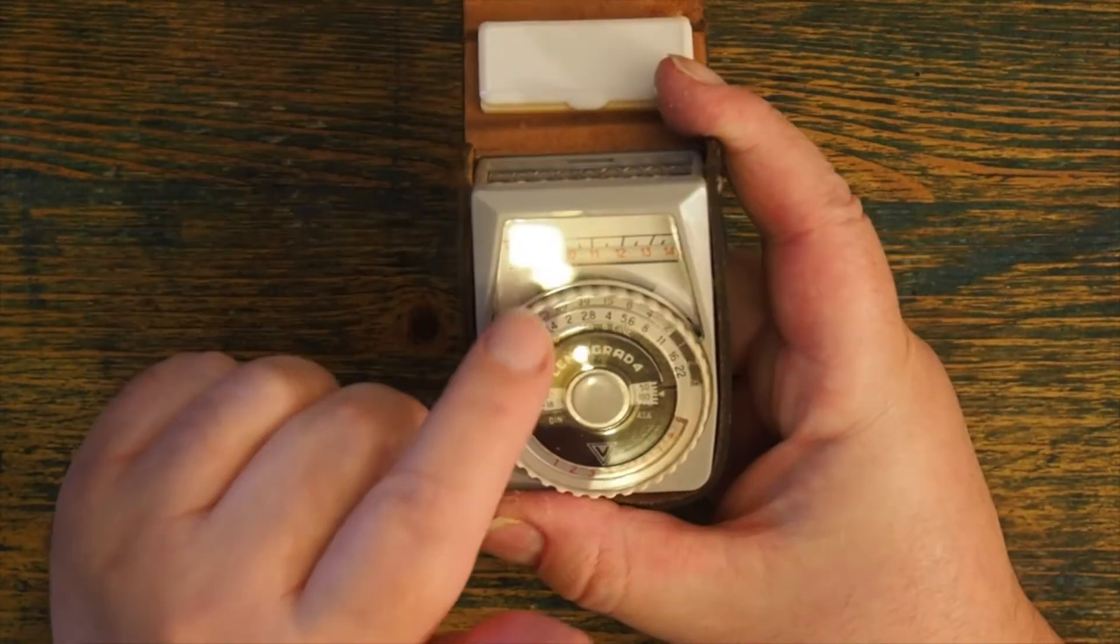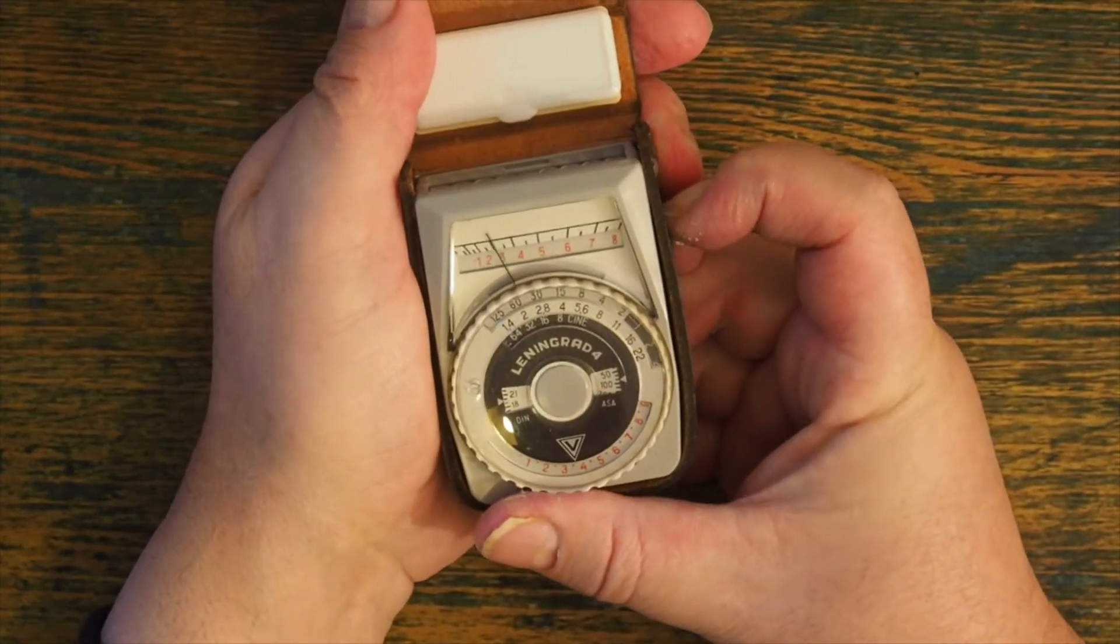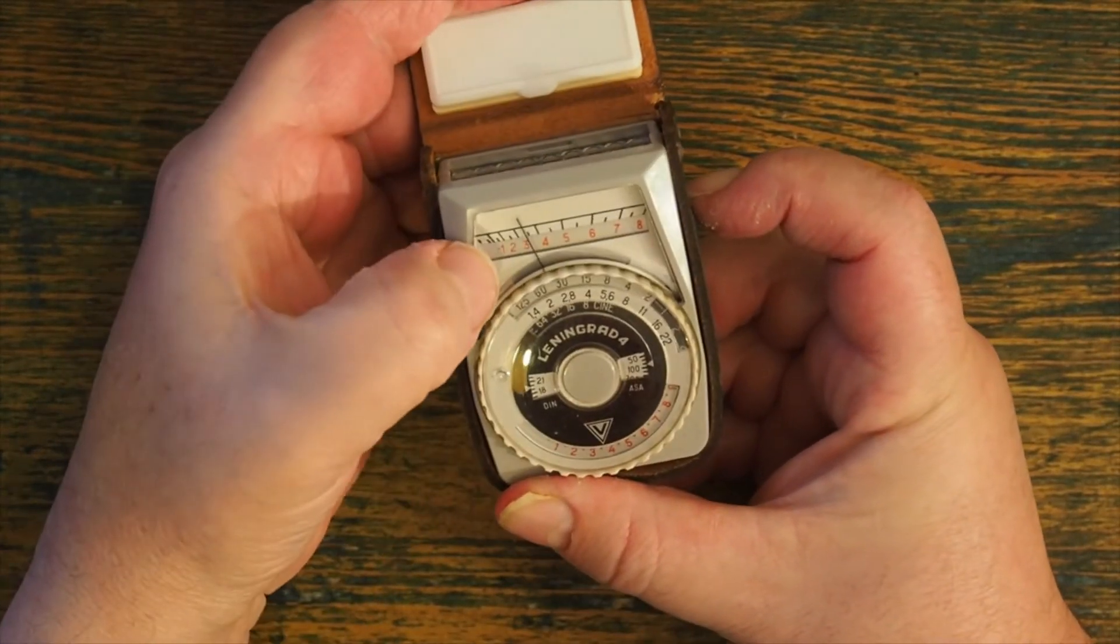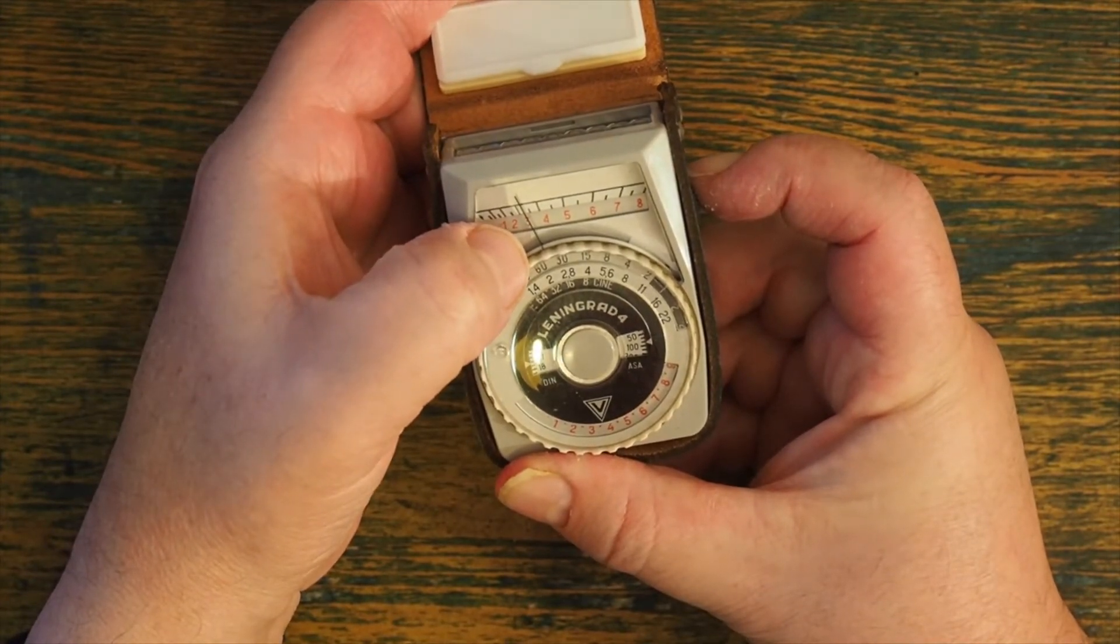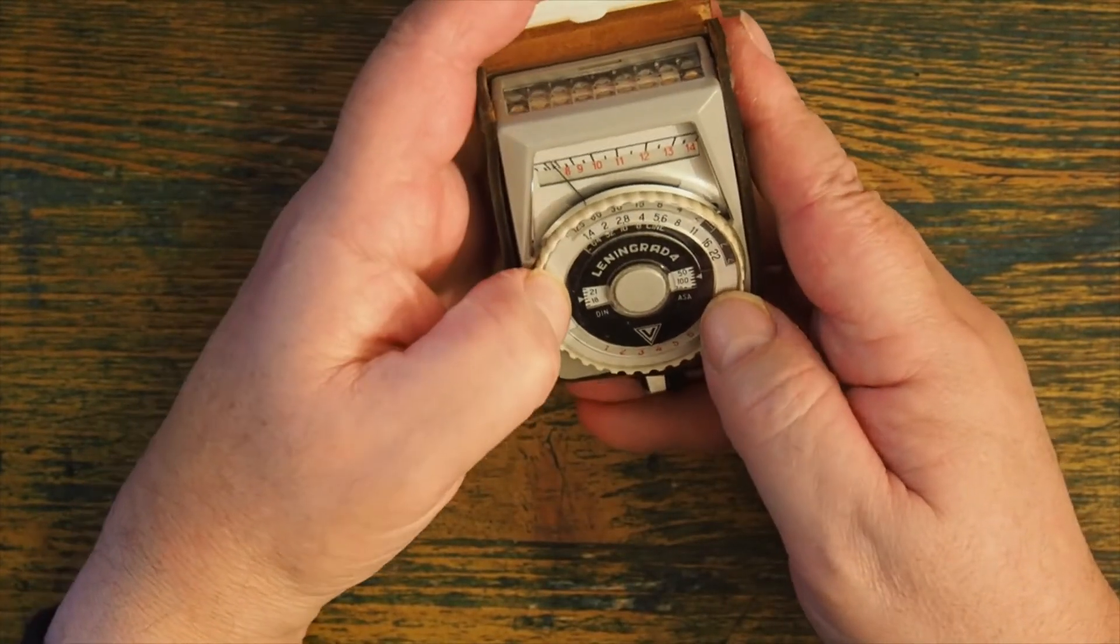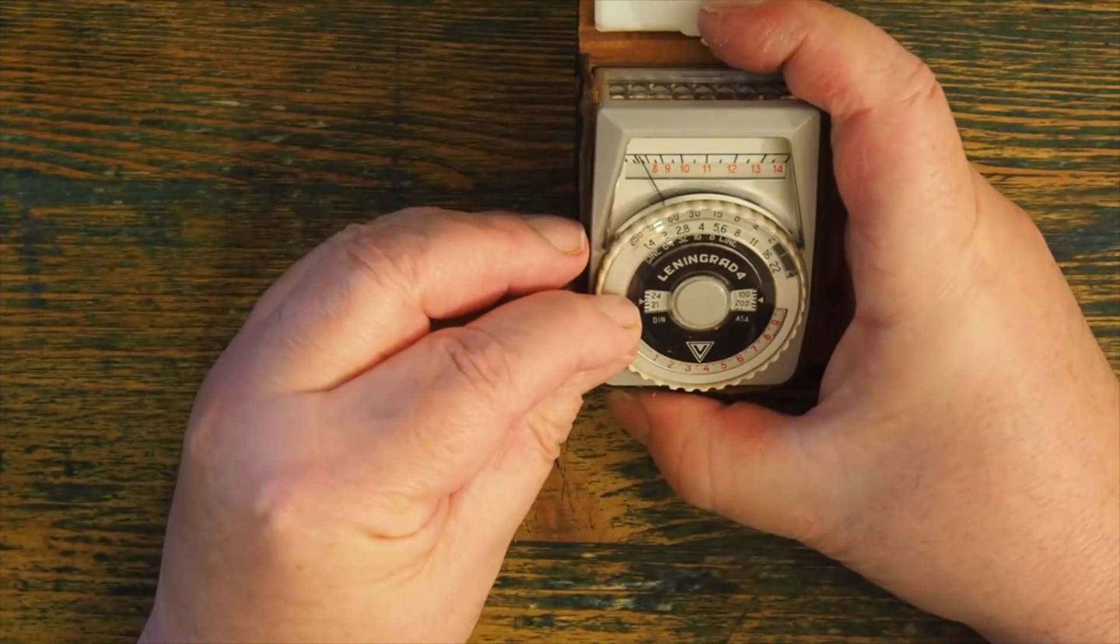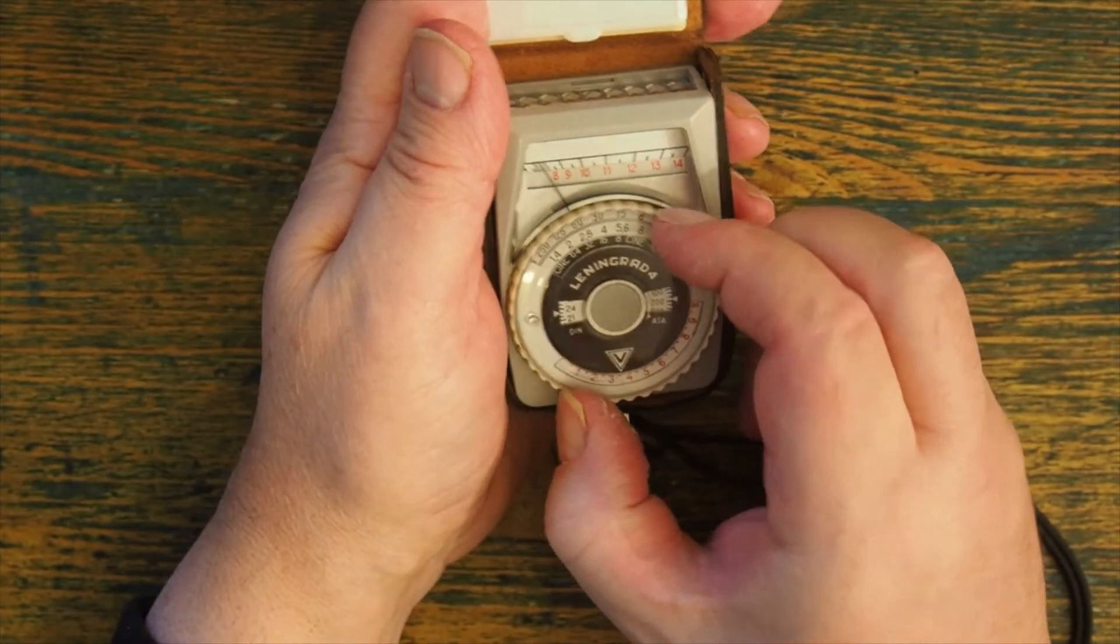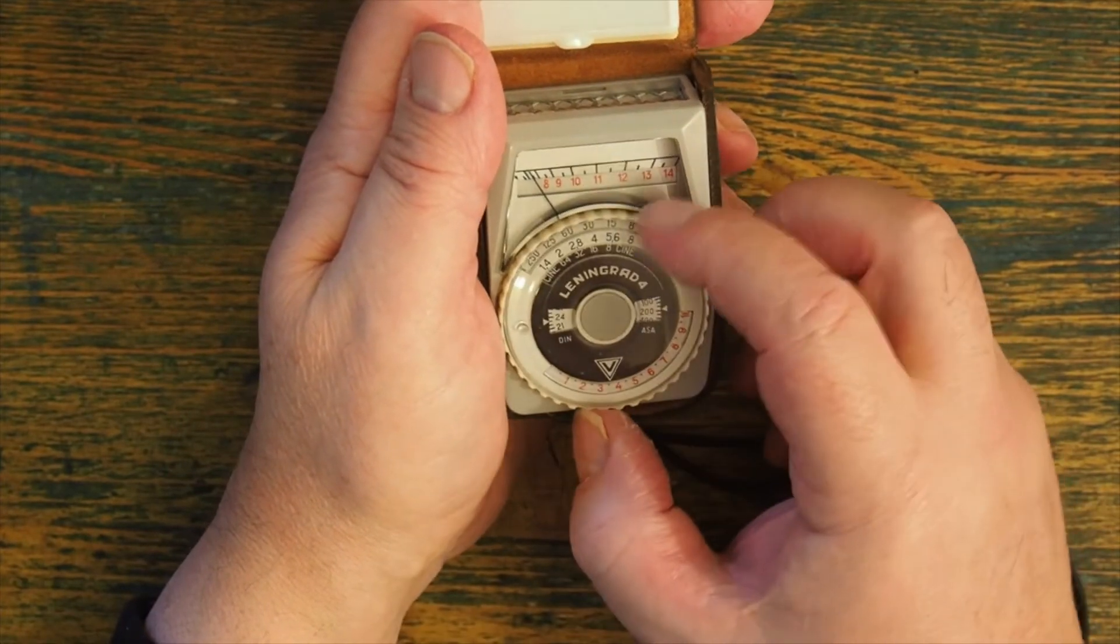You can see that it's got a scale that runs here from 8 through to 14 and a lower scale which runs from 1 through to 8. At the moment indoors it's registering a 3. So to make this work, first of all I set my ISO, and I'm going to set the ISO to say 200. Then I move this dial around to the point where this arrow points at a number 3.